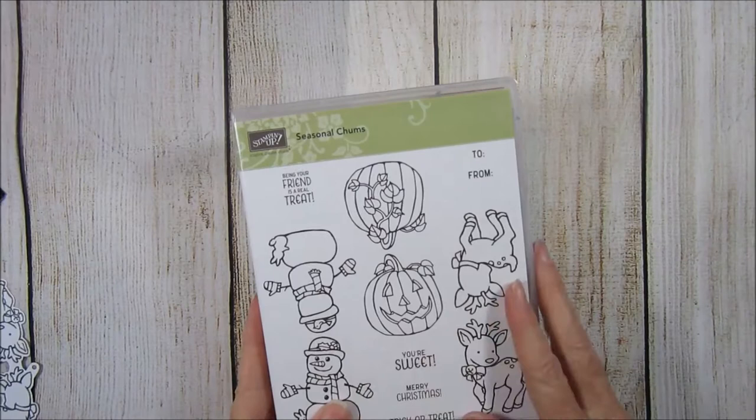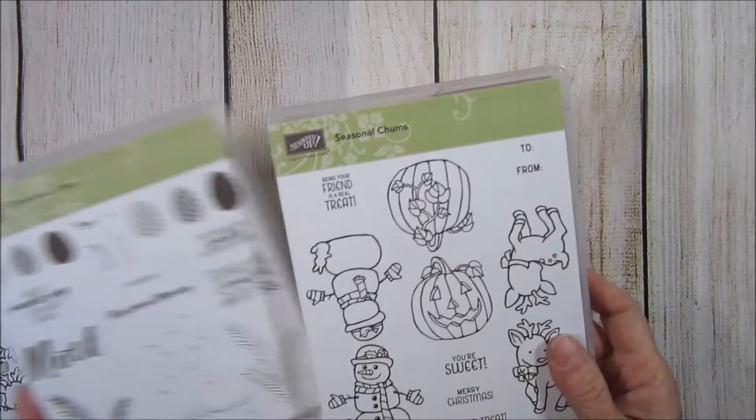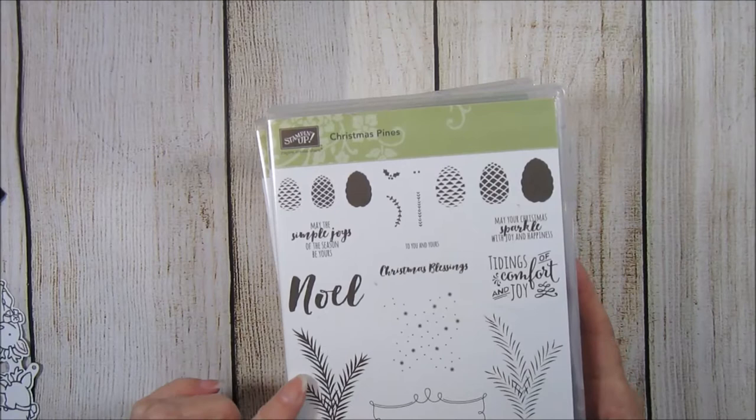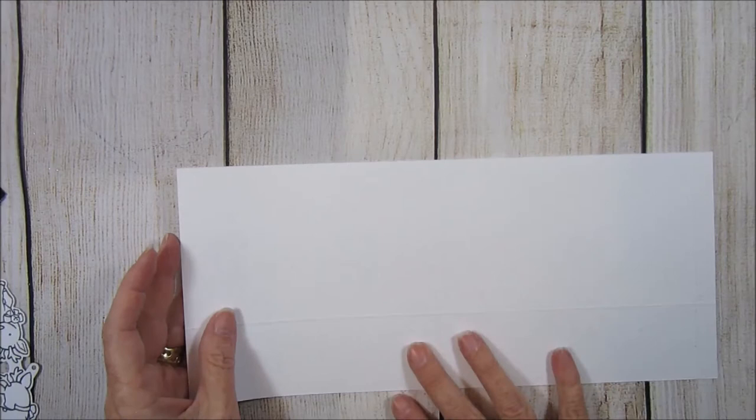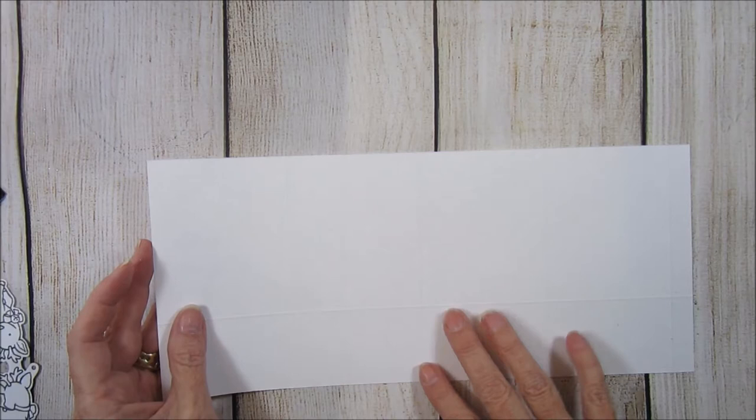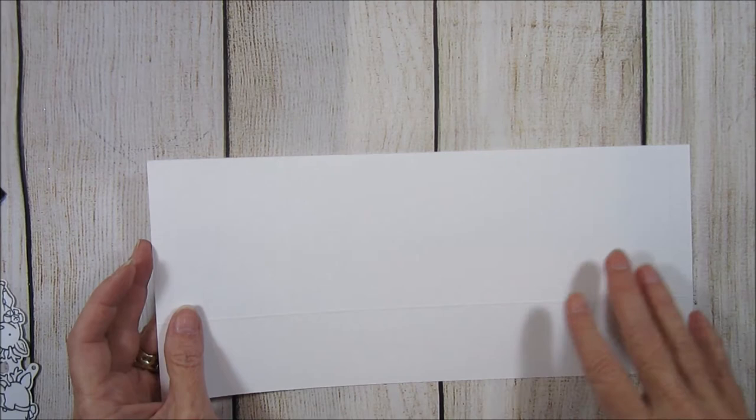What you'll need for this project is the Seasonal Chum stamp set, and we'll be using the little reindeer and the to and from, and then also this stamp here from the Christmas Pines stamp set. You'll want a piece of Whisper White that measures 12 inches by 5 and a quarter inches, so you'll be using the 12 by 12 Whisper White cardstock, and you can get two of these boxes from each sheet.